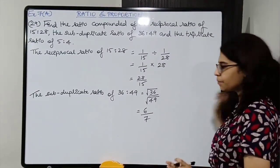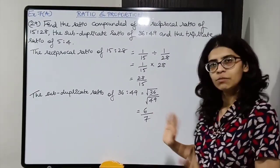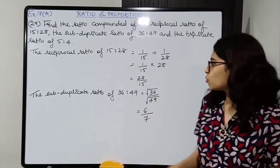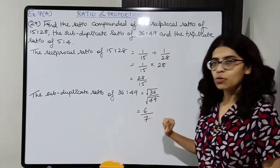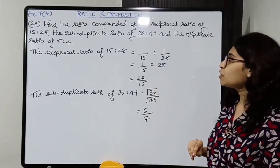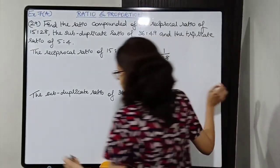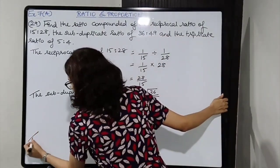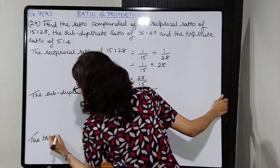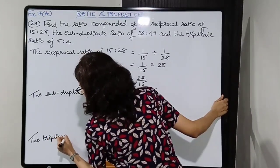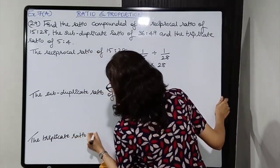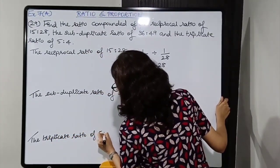You are supposed to know cubes up to 30, as well as cube roots, squares, and square roots. So we found the three ratios. Now we have to compound them — multiply them.